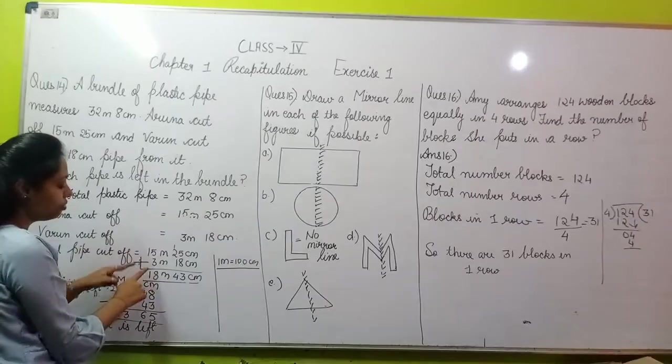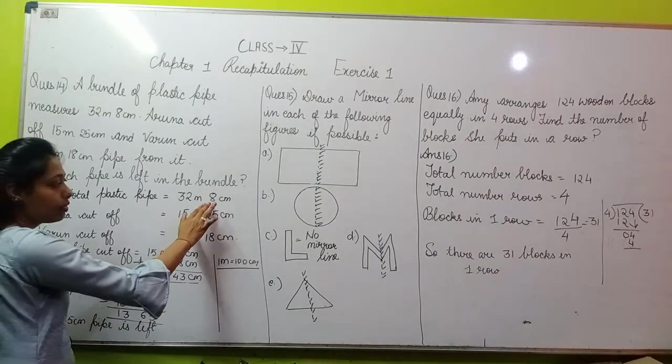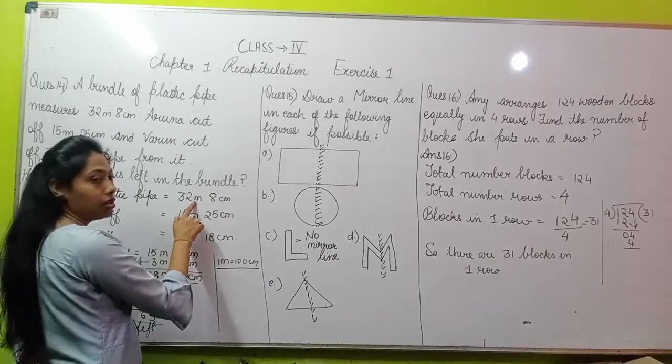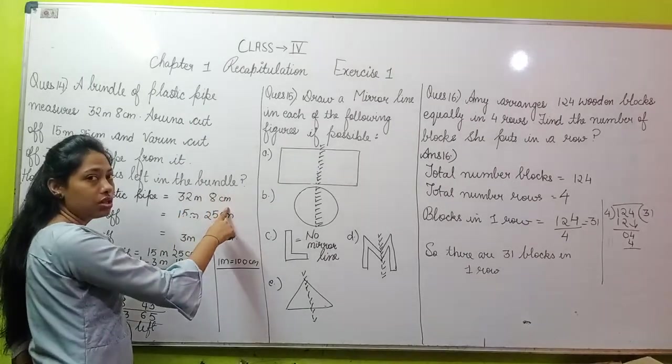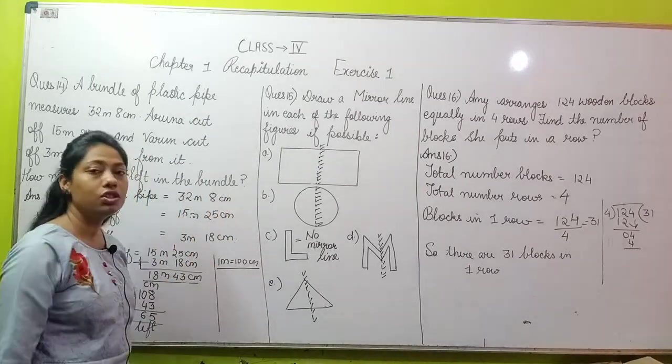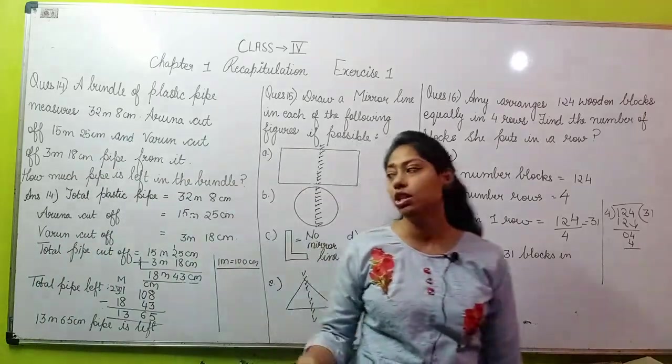From meters we will carry forward 1, so 32 minus 1 becomes 31. Now 1 meter has to be sent to centimeters. We should know what is the value of 1 meter in centimeters. 1 meter equals 100 centimeters.